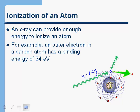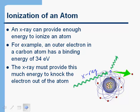Now, how this relates to binding energy, the binding energy is simply how much energy that x-ray has to be able to deliver to that electron to knock it out of the atom. So an outer electron in carbon has a binding energy of 34 electron volts. That means that the x-ray would have to provide 34 electron volts to knock that electron out of the atom.